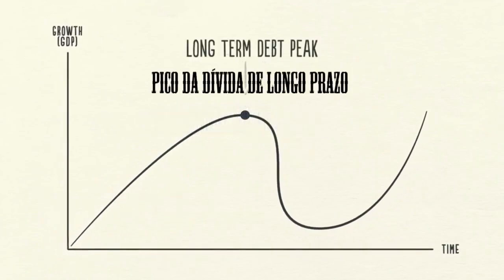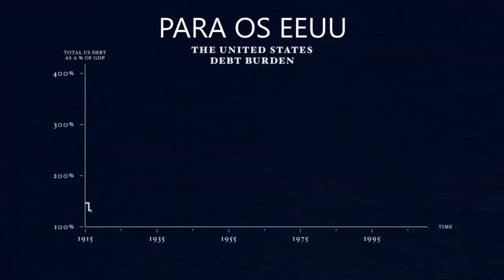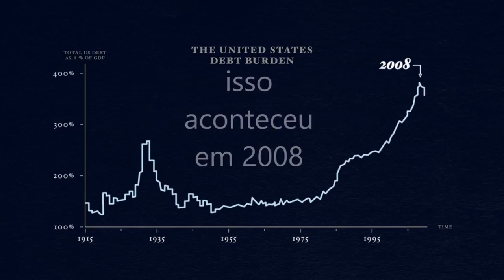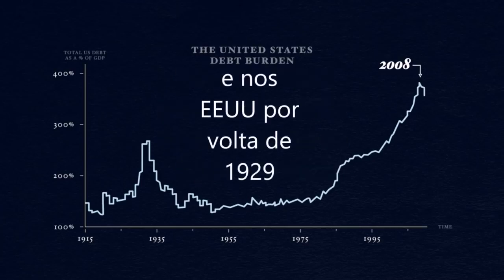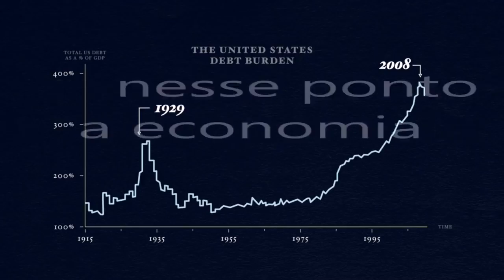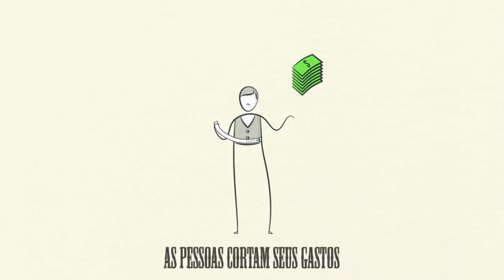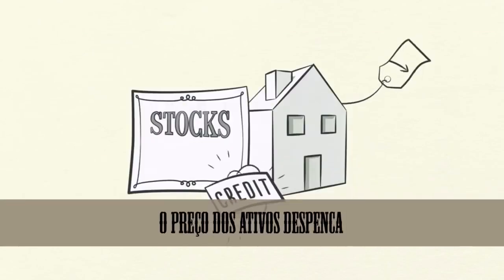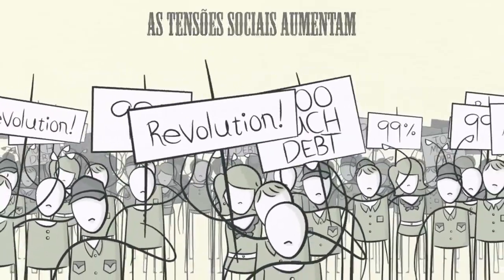This is the long-term debt peak. Debt burdens have simply become too big. For the United States, Europe, and much of the rest of the world, this happened in 2008 — the same reason it happened in Japan in 1989 and in the United States back in 1929. Now the economy begins deleveraging. In a deleveraging, people cut spending, incomes fall, credit disappears, asset prices drop, banks get squeezed, the stock market crashes, social tensions rise, and the whole thing starts to feed on itself the other way.